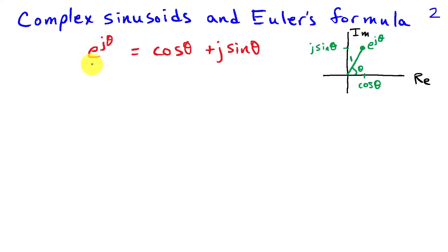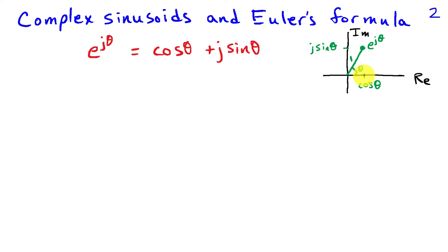Recall that we can write e to the j theta as cosine theta plus j sine theta. Looking at this in the complex plane, e to the j theta is a point at angle theta with respect to the positive real axis and unit distance from the origin. The projection onto the real axis is cosine theta, while that onto the imaginary axis is sine theta.